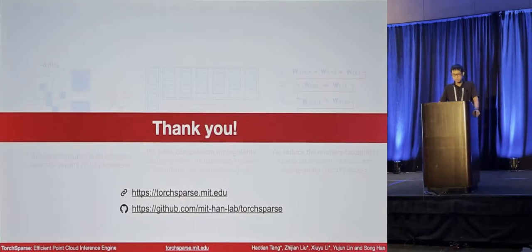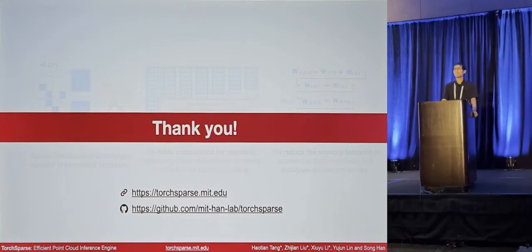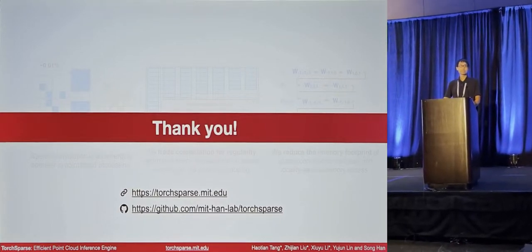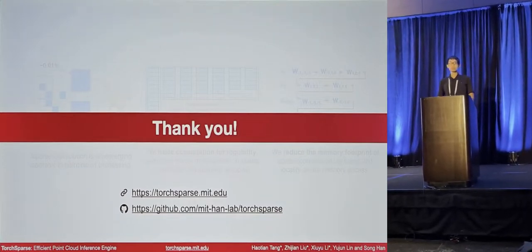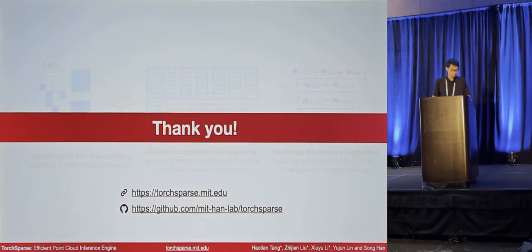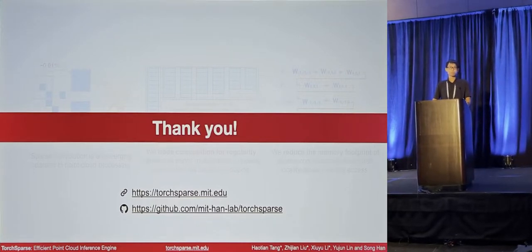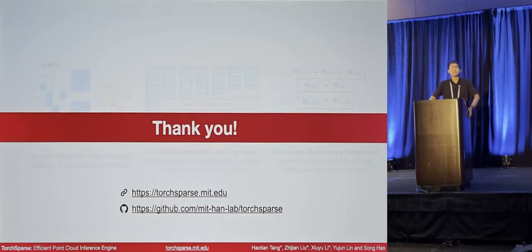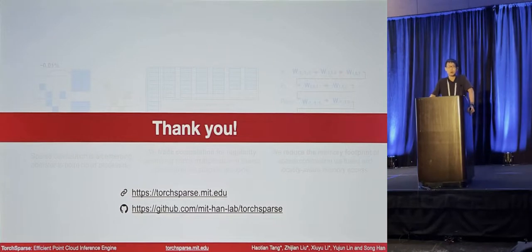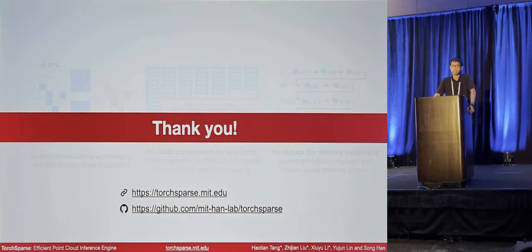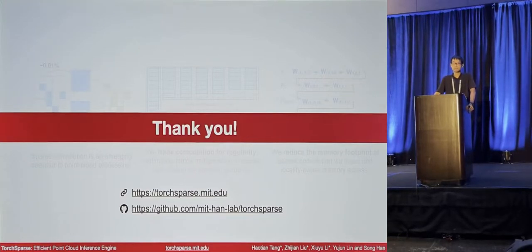That's all for my presentation. Thank you for your interest. Welcome to check out our project page and GitHub code release. During Q&A, the moderator asked whether the optimizations could apply to other sparse computation problems beyond point cloud inference. The speaker responded that RAC tensor computation is one potential area for adaptive grouping, and the locality-aware memory access pattern could also be a beneficial optimization for graph problems.